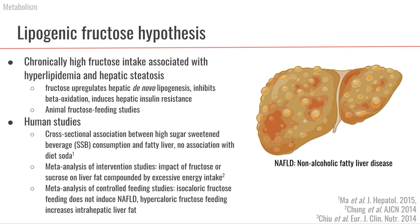From the larger body of human studies, there doesn't seem to be strong support for the idea that dietary fructose — as humans consume it — leads to a lipogenic outcome in the liver. Another meta-analysis of controlled feeding studies found that isocaloric fructose feeding did not induce NAFLD, whereas hypercaloric fructose feeding did increase intrahepatic fat storage. Overall, human research doesn't support the lipogenic fructose hypothesis when fructose is consumed in amounts roughly equivalent to glucose, as in sucrose or high-fructose corn syrup.